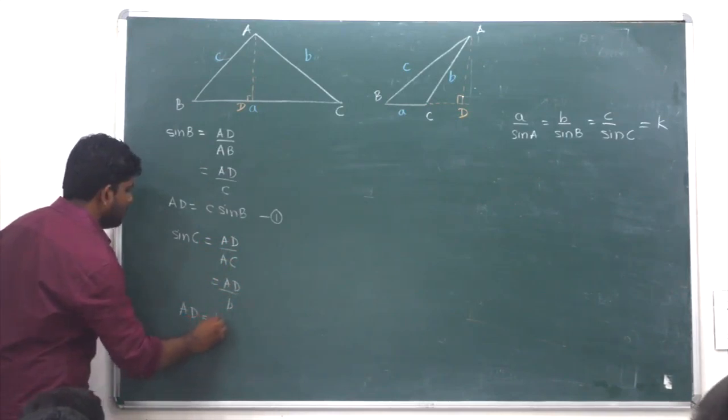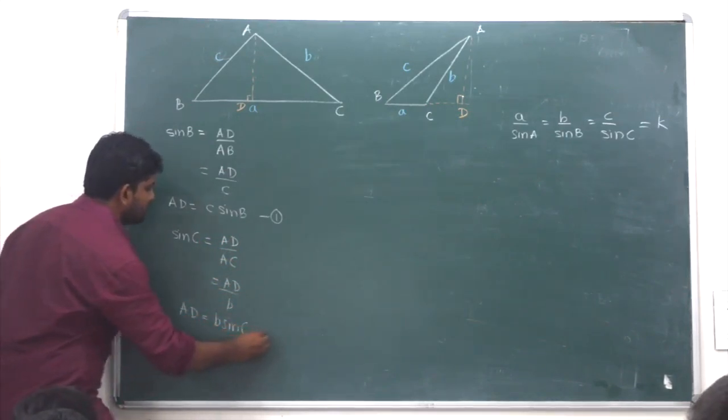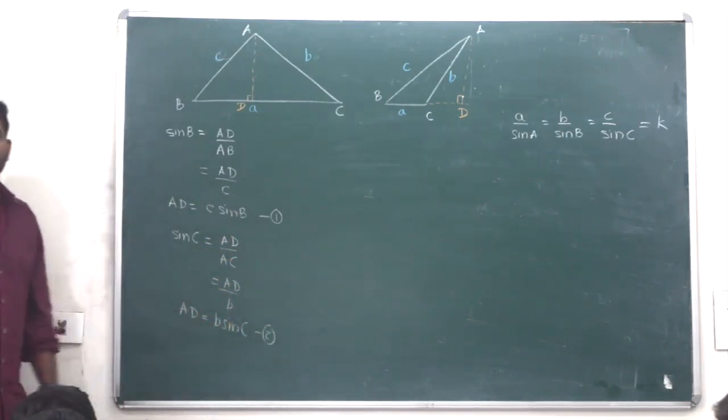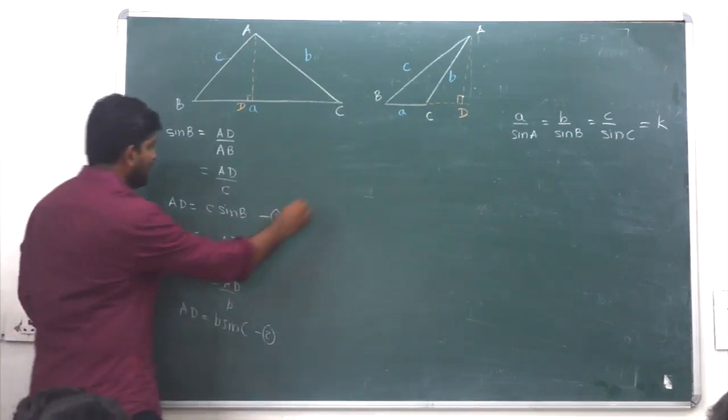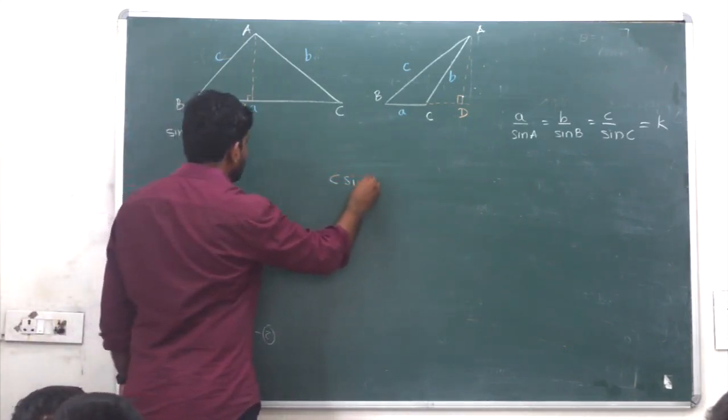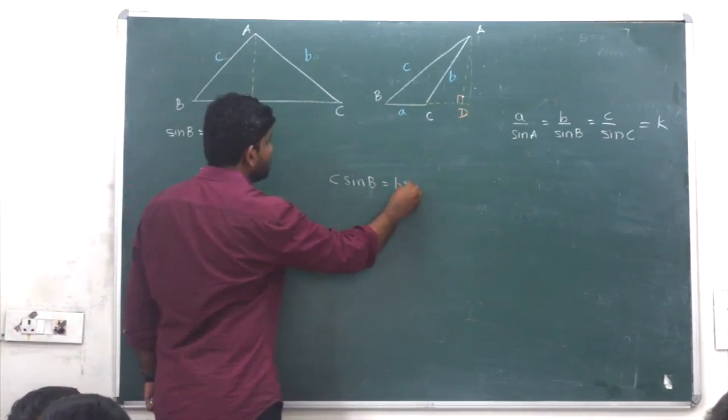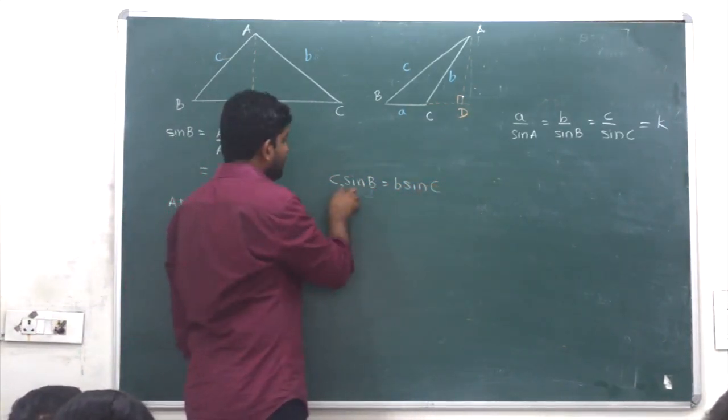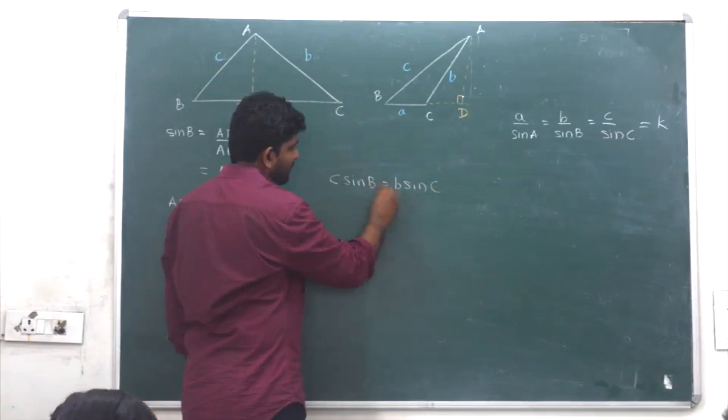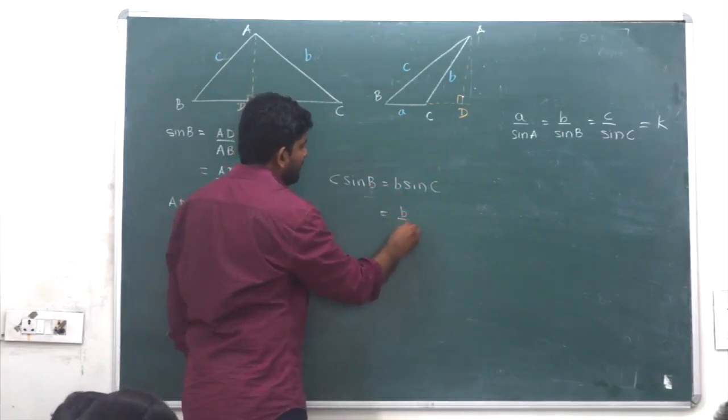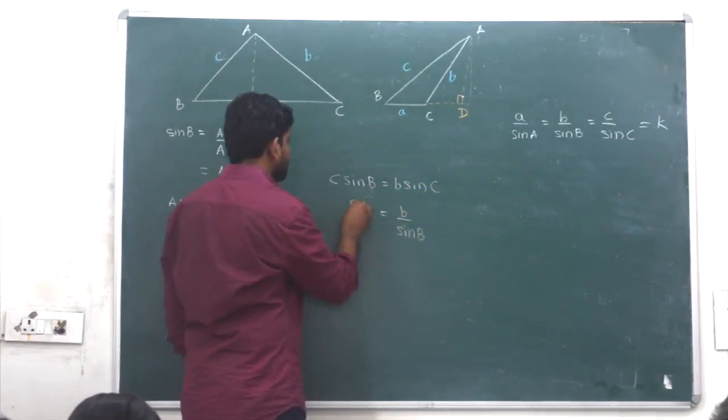c sine B equal to b sine C, equal to b sine C. So we can write c sine B equal to b sine C. Therefore, b upon sine B, any chain, b upon sine B equal to c upon sine C.